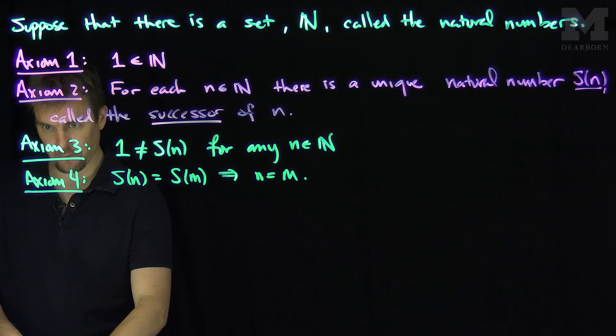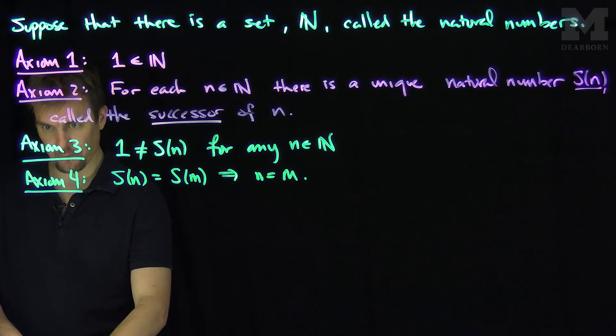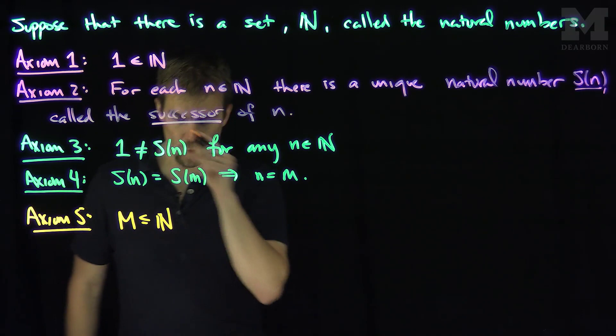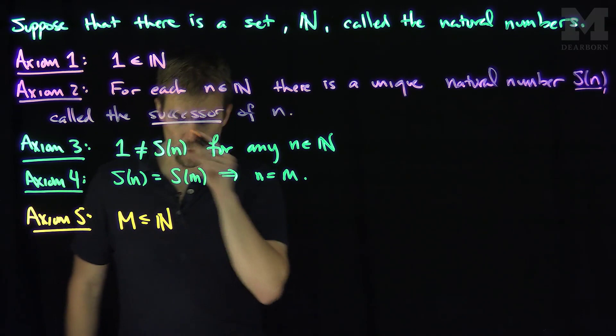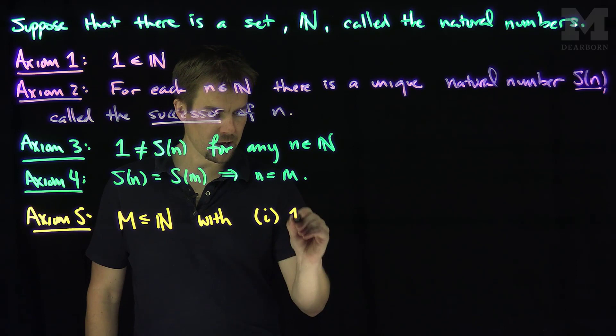Finally, the fifth axiom is of a different vein but very useful. This is the axiom of induction. Axiom 5 says that if I have a set M which is a subset of N with two properties—property (i): 1 is in M,